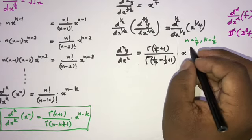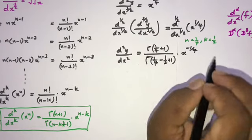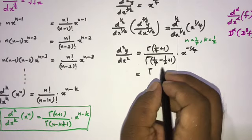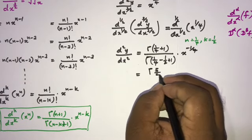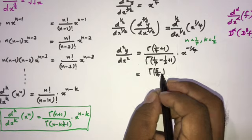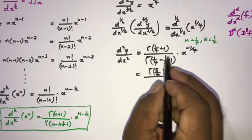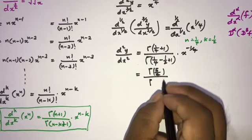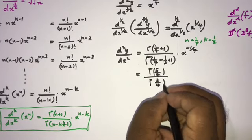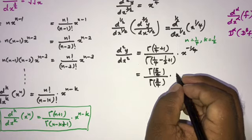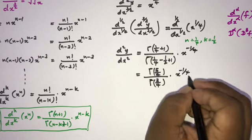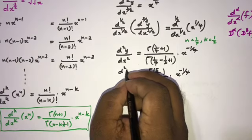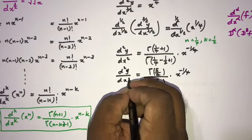Simplifying: n-k = 1/4 - 1/2 = -1/4, so we get Γ(5/4) / Γ(3/4) · x^(-1/4). Therefore: d²y/dx² = Γ(5/4) / Γ(3/4) · x^(-1/4).